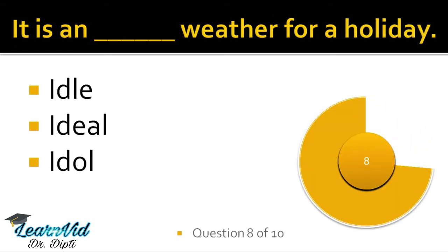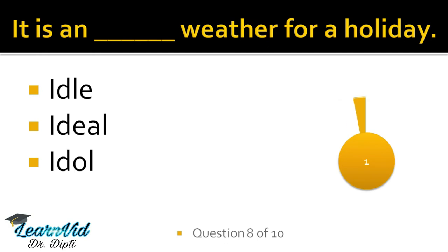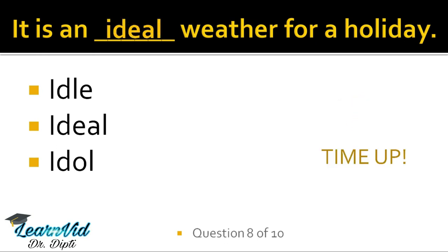It is an dash weather for a holiday. The correct option is I-D-E-A-L. Now the first option, I-D-L-E, means pekaar baitna — aalsi, lazy, or having no purpose or importance. Next is I-D-E-A-L, which means perfect — it is an ideal weather for a holiday, perfect weather for a holiday. And the last one, I-D-O-L, has two meanings: pahla, moorthi — a god's image or statue; and second, like Indian Idol — a hero or star whom people love and admire, we also call that an idol.